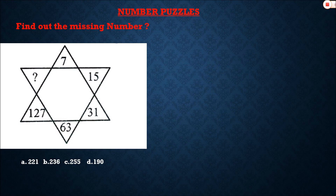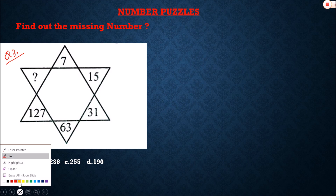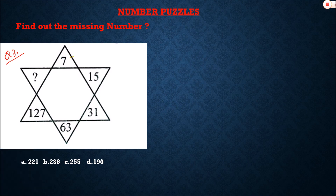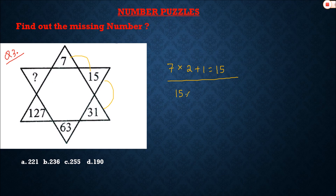Question number three: find out the missing number. We see 7 and 15 — how is 7 related to 15? 7 multiplied by 2 is 14, plus 1 equals 15. Then 15 multiplied by 2 is 30, plus 1 equals 31. So all these numbers follow the pattern: multiply by 2 and add 1.